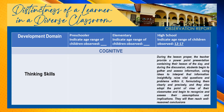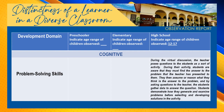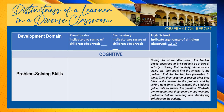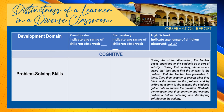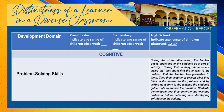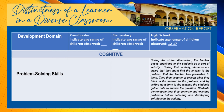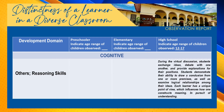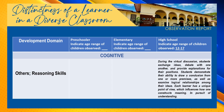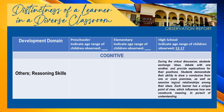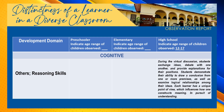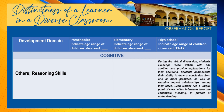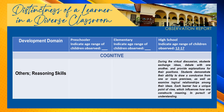Number three: problem-solving skills. During the virtual discussion, the teacher poses questions to the student as a sort of activity. Students are aware that they must find the answer to the problem presented, assume or reason what they think is the answer, and gather data by asking questions to the teacher. The students demonstrate how they generate and examine problems before selecting and developing solutions. For reasoning skills based on our observation: during the virtual discussion, the student exchanges ideas, debates with one another, and provides explanations for their positions. Students demonstrate the ability to draw conclusions from one or more premises and examine logical relationships among ideas, with each learner having a unique point of view that influences how one constructs meaning in pursuit of understanding.